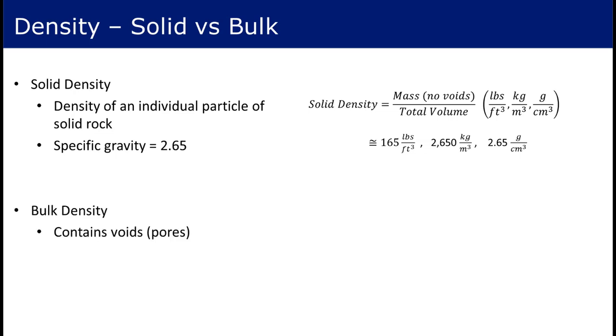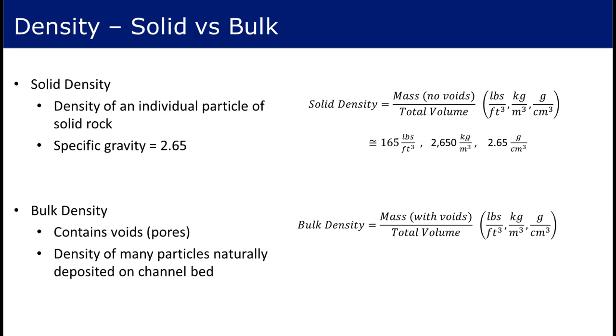Bulk density is mass per volume of sediment that contains voids or small air pockets, also called pores. This represents the natural condition of sediment particles that have deposited individually on a river channel bed or floodplain and is significantly lower than the solid density.